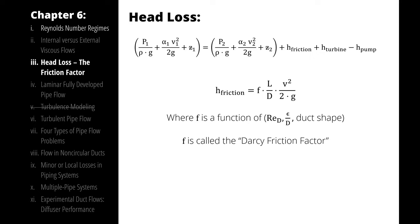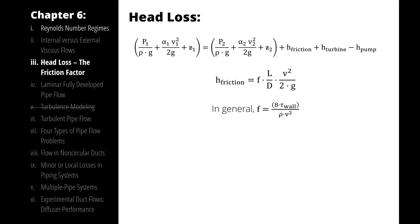The Darcy friction factor in general is a function of the Reynolds number, a relative roughness, which is the proportion of how bumpy the pipe is divided by diameter, and the shape of the pipe or duct through which the fluid is flowing. We can calculate the friction factor by using 8 times the shear stress at the wall divided by diameter times velocity squared.